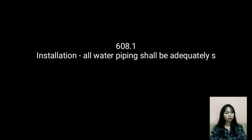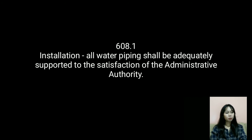The last section I will discuss is Section 608, which is all about installation, inspection, and testing. Section 608.1 — Installation: All water piping shall be adequately supported to the satisfaction of the administrative authority. Burrs and ends shall be reamed to the full bore of the pipe or tube.